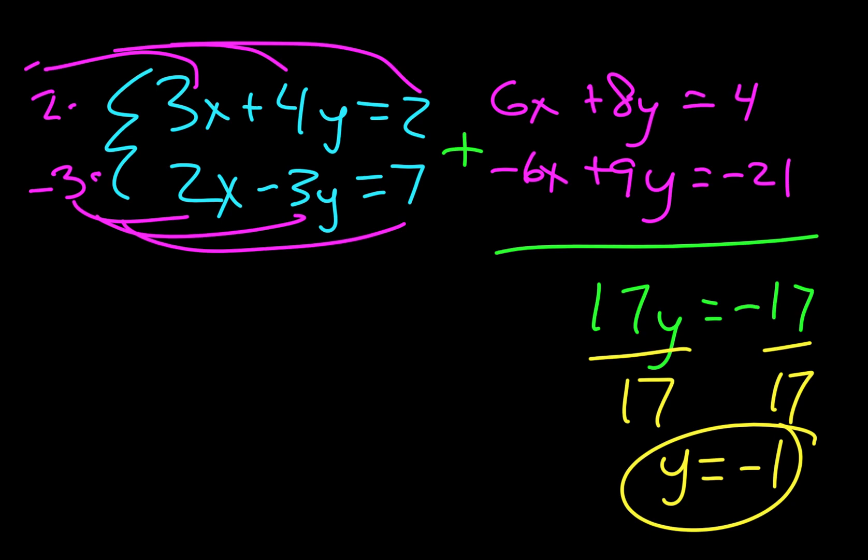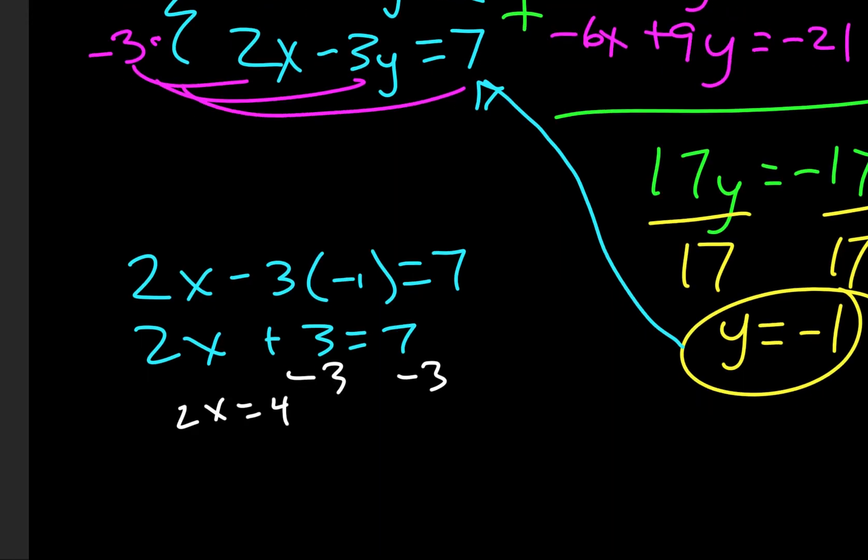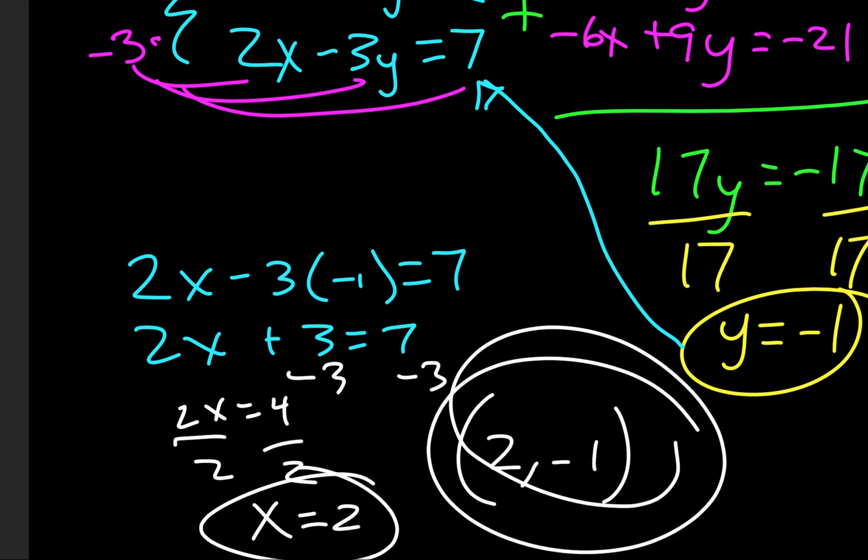Once again, we need an x and a y for our final answer. So this time I'll plug it into the bottom. So we get 2x minus 3 times negative 1 equals 7. Combine those. So 2x plus 3 equals 7. And then we just do the algebra to solve for x. Subtract 3. 2x equals 4. Divide by 2. x equals 2. And if we want to, we can write that as an ordered pair. And that's our final answer. So that's everything from that section. If you need help, make sure you come to Math Lab and Calculator. See you later.